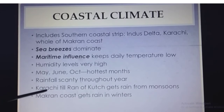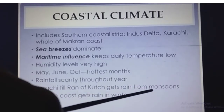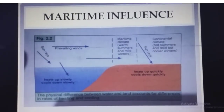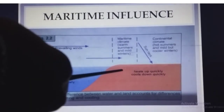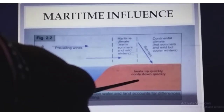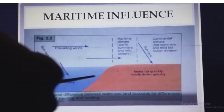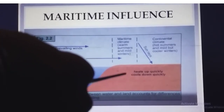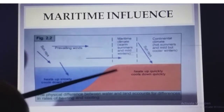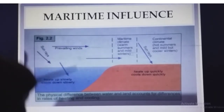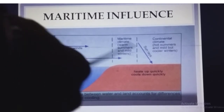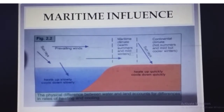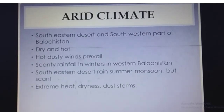Karachi to the Rann of Kutch gets rain from the monsoons, while the Makran coast gets rain only in the winters. Maritime influence is the influence that the sea body has on the land — because of being closely connected to a sea body, the coastal areas have a very moderate climate. Their winters and summers are also very moderate and bearable, because the sea normalizes and balances the temperature of the land.